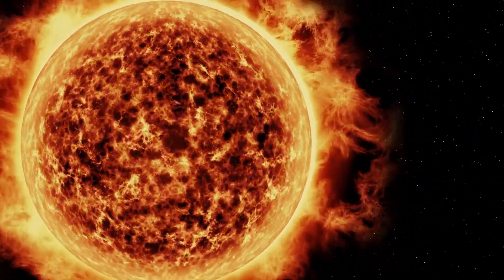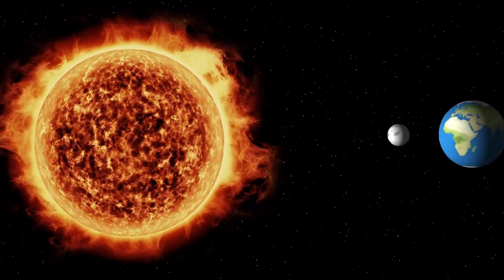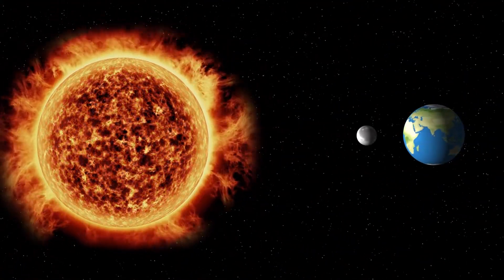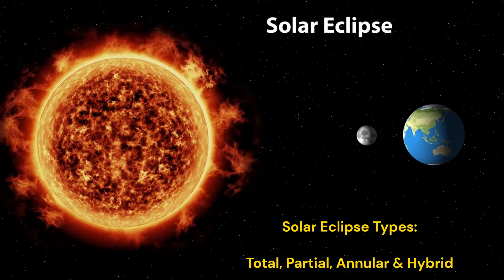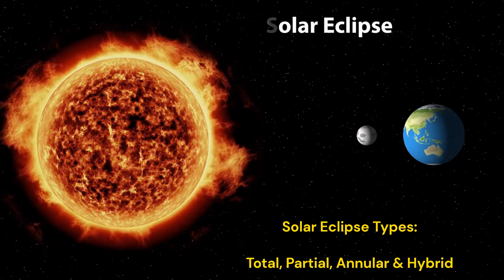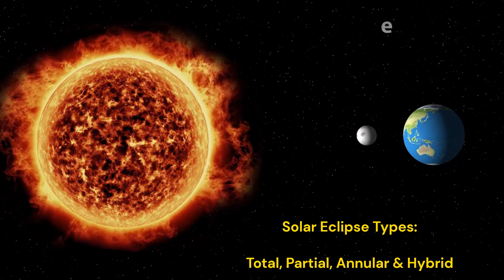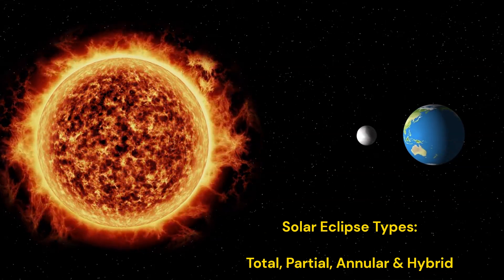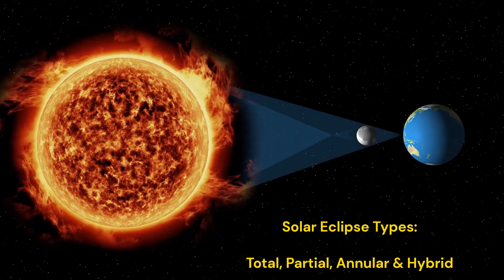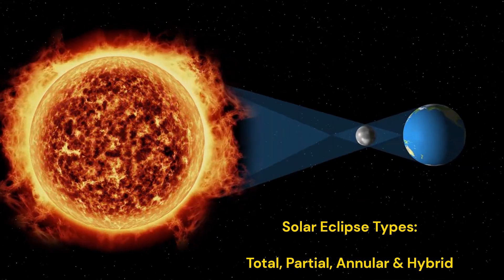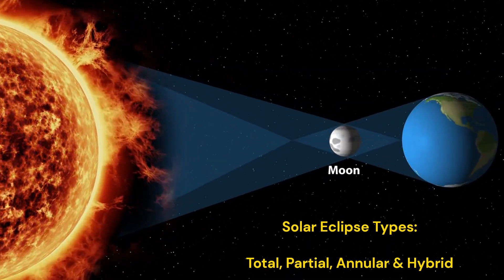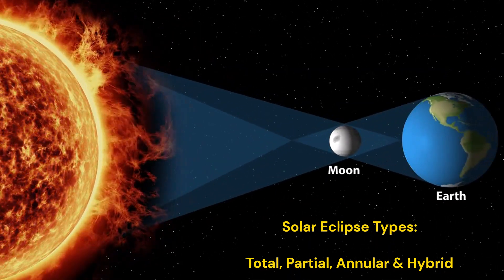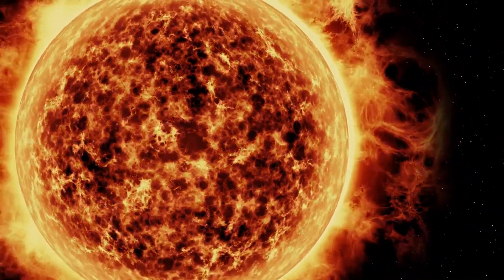Solar eclipses are categorized into total, partial, annular, and hybrid. These classifications are based on the alignment of the sun, moon, and earth, and the resulting visibility of the sun during the eclipse.